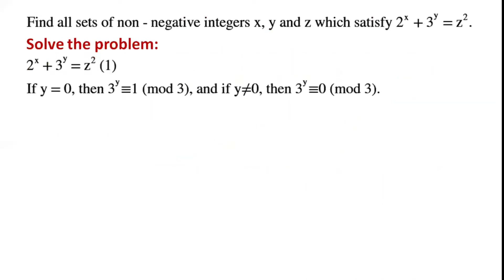If y equals 0, then 3 to the power of y is congruent to 1 mod 3. And if y doesn't equal 0, then 3 to the power of y is congruent to 0 mod 3. Case 1: y equals 0.